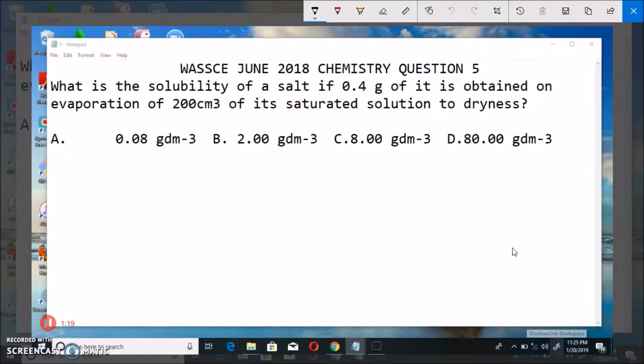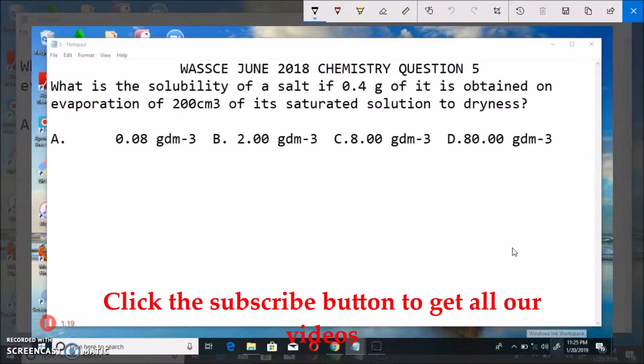Option A, 0.8 gram per dm³. B, 2.00 gram per dm³. C, 8.00 gram per dm³. D, 80.00 gram per dm³.